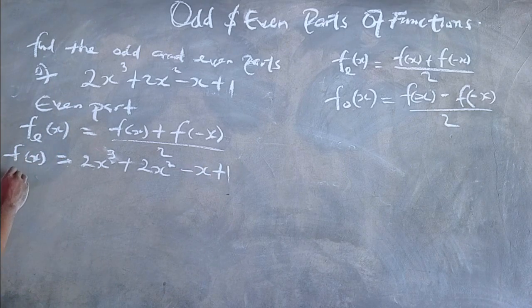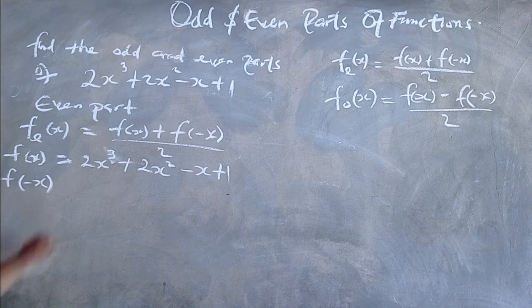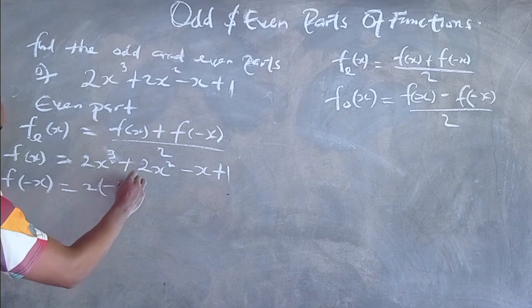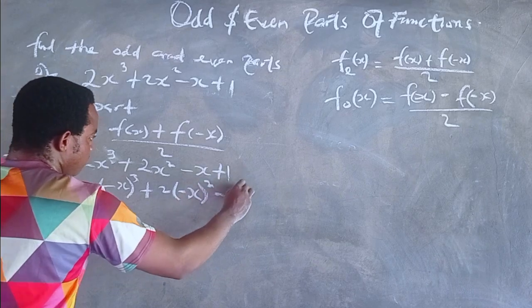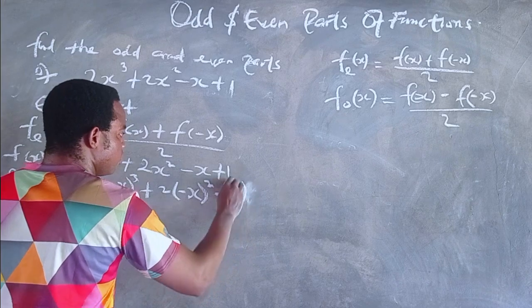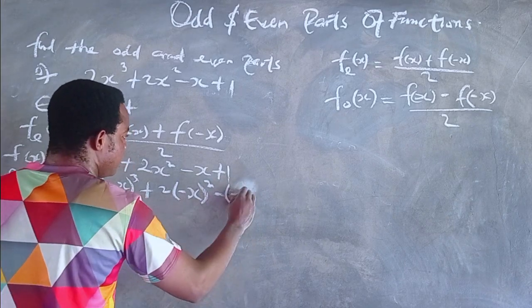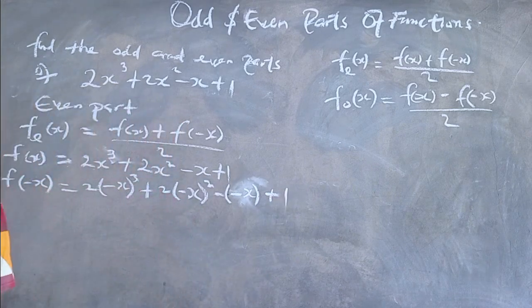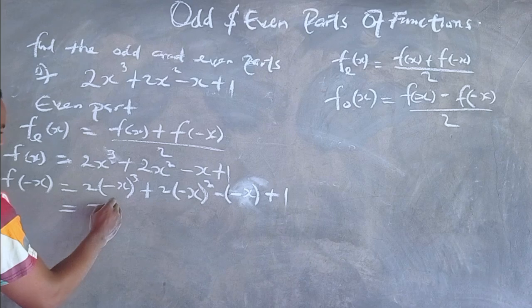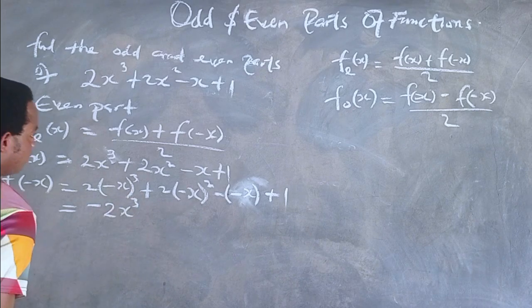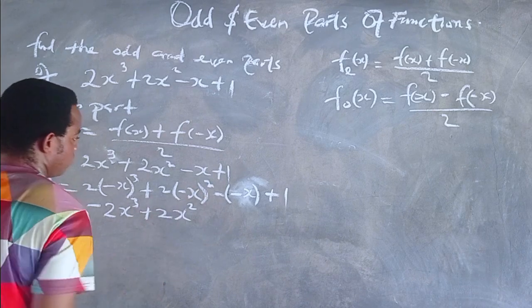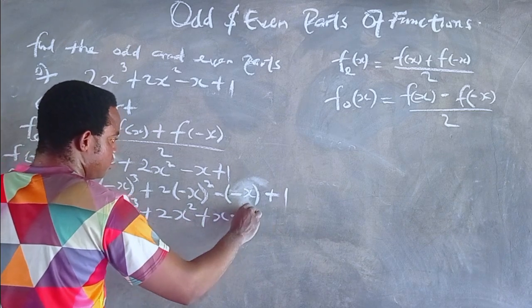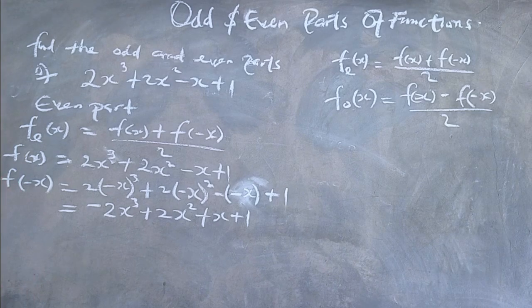Now, what is f of negative x? Let us put negative x everywhere we have x in f of x. So we have 2 times negative x raised to power 3, plus 2 times negative x raised to power 2, minus negative x, plus 1. This gives us negative 2x raised to power 3 — since minus raised to power 3 is minus — plus 2x squared, since minus raised to power 2 is plus, and plus x, plus 1.